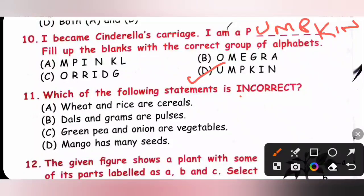Eleventh one, which of the following statement is incorrect? We need to select the incorrect statement. Option A: Wheat and rice are cereals, it is correct. B: Dals and grams are pulses, yes it is correct. C: Green pea and onion are vegetables, yes it is correct. D: Mango has many seeds. No, mango is a one seeded fruit. So option D is the incorrect statement. Option D is the correct answer.